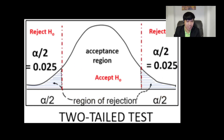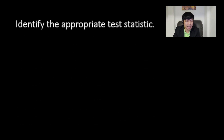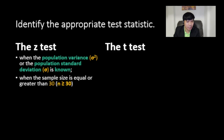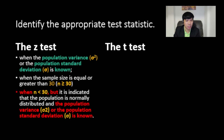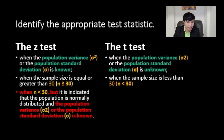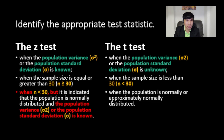How do we identify the appropriate test statistic? We have the Z-test and the T-test. We use the Z-test when the population variance or standard deviation is known, or when the sample size is equal to or greater than 30. We also use the Z-test when n is less than 30, but the population is normally distributed and the population variance is known. When the population variance is unknown, we use a T-test. We also use a T-test when the sample size is less than 30 and the population is normally or approximately normally distributed.